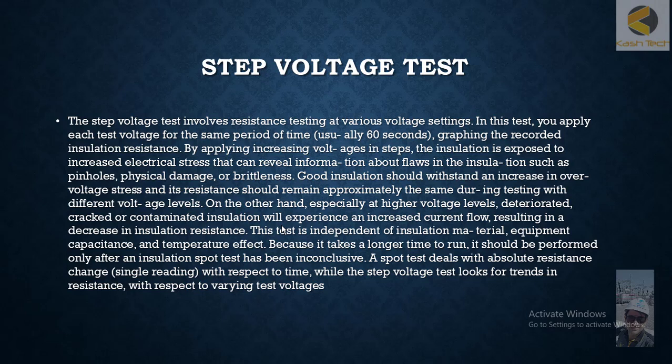The insulation is exposed to increasing electrical stress that can reveal information about flaws in the insulation, such as pinholes, physical damage, or brittleness. Good insulation should withstand an increase in applied voltage stress and its resistance should remain approximately the same during tests with different voltage levels. On the other hand, especially at higher voltage levels, deteriorated, cracked, or contaminated insulation will experience an increased current flow, resulting in a decrease in insulation resistance.